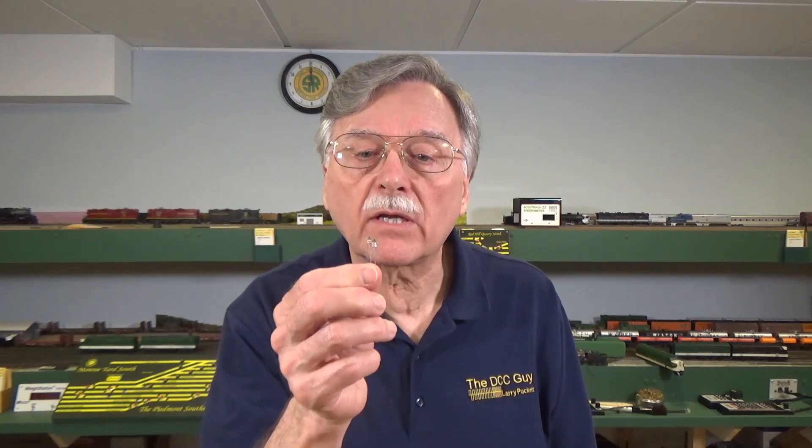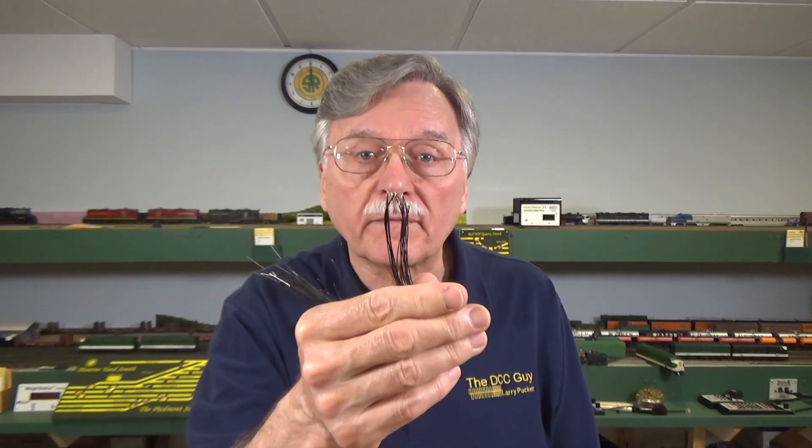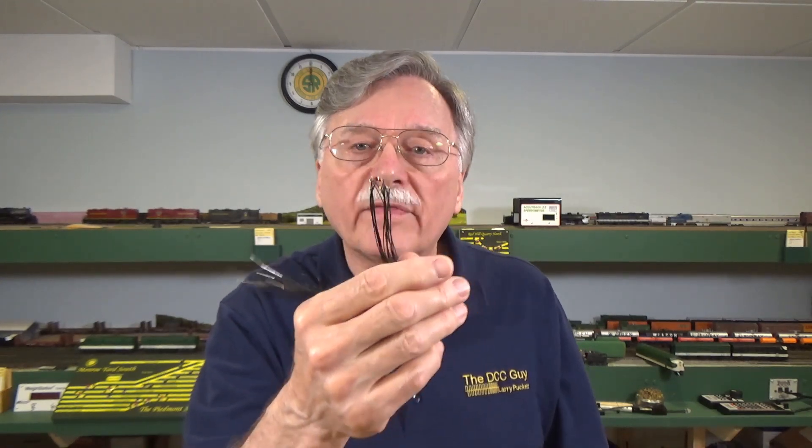Today on the DCC Guy, I want to talk about using LEDs to light your locomotives. Over the last few years, most manufacturers have switched to LEDs instead of using bulbs. I've been using these 3mm ones for a number of years. However, recently I switched and I've been using a lot of these small surface mount LEDs that come pre-wired with a 1000 ohm resistor. I'll show you both methods in locomotives that I've installed decoders in recently.